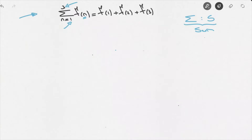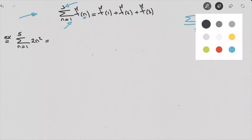Now let's go ahead and see what that would look like with an actual example. For instance, let's say we were asked to calculate the sum from n equals 1 to 5 of 2n squared. This is asking us to add all the values we would obtain if we replace n by all the integers between the initial value 1 and the final value 5.